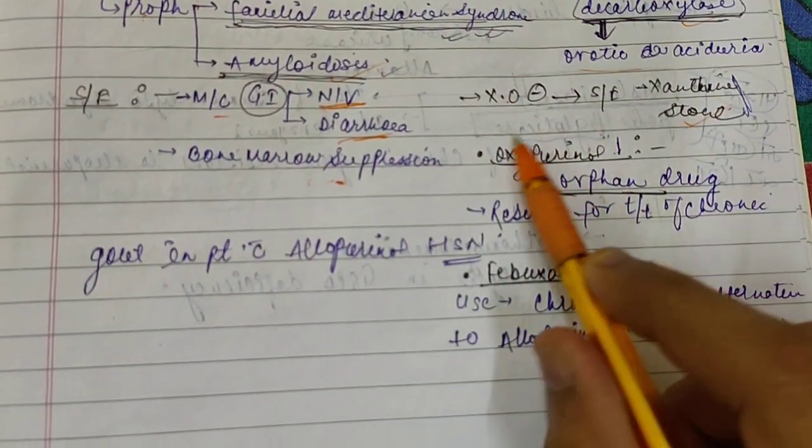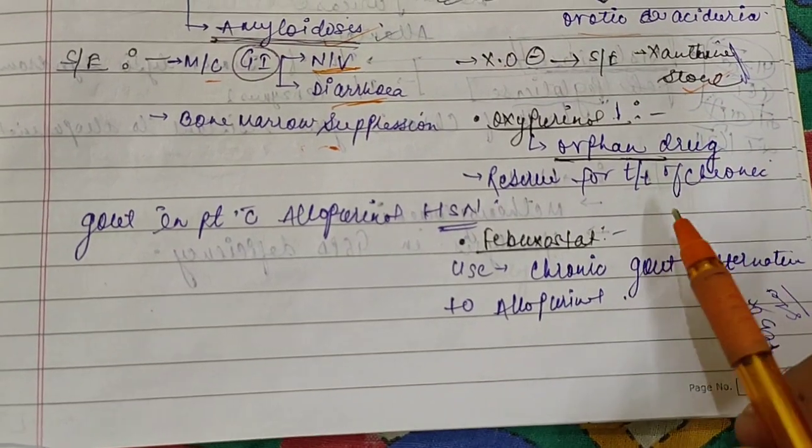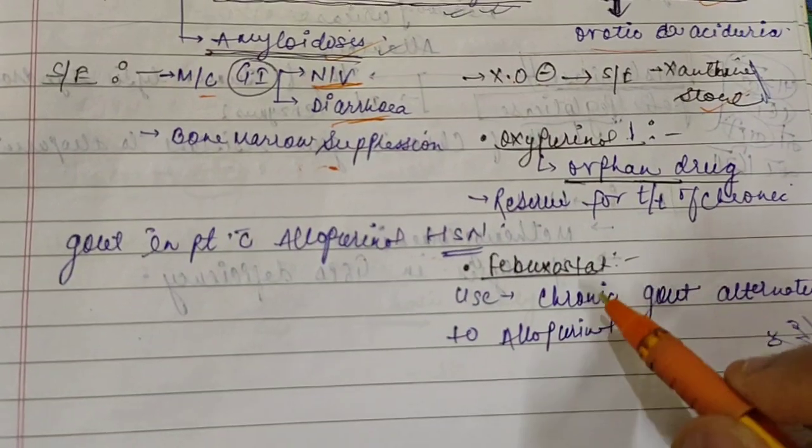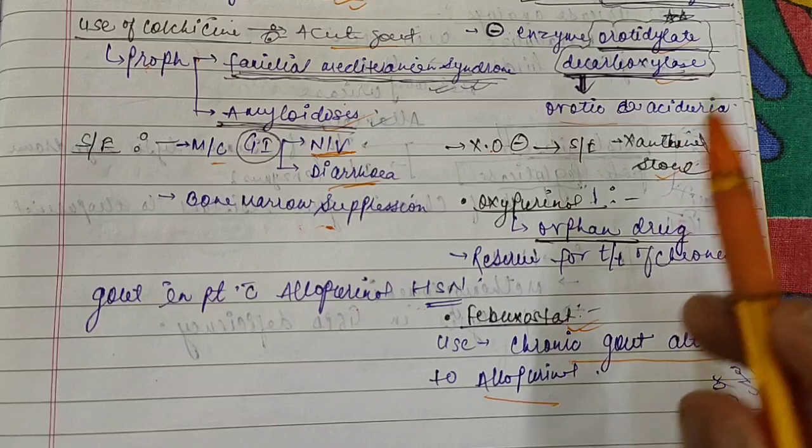Now the next drug after allopurinol is oxypurinol. Oxypurinol is an orphan drug and it is reserved for the treatment of chronic gout in patients with allopurinol hypersensitivity. The next is febuxostat, and it is used in chronic gout alternative to allopurinol.